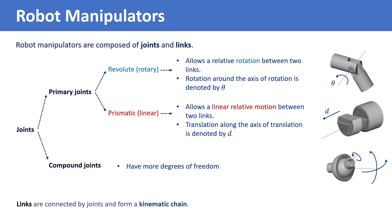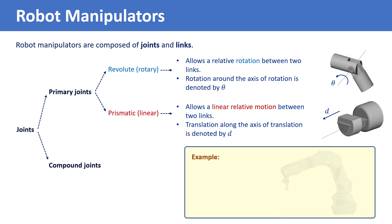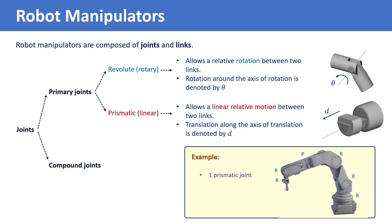Manipulators' links are connected by joints and form a kinematic chain. As an example, consider this robot manipulator which has one prismatic joint and five revolute joints.